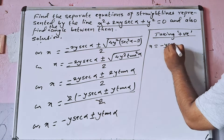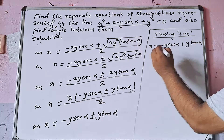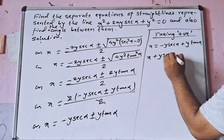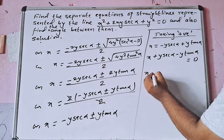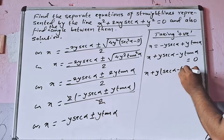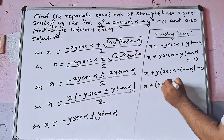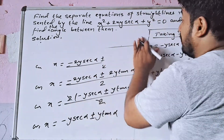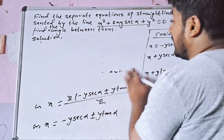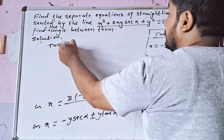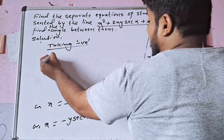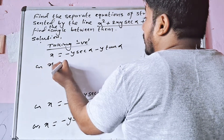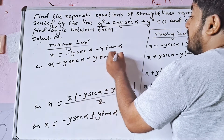Since sec²α minus 1 equals tan²α, we get root(sec²α minus 1) equals tanα. Taking the positive case: x equals minus y·secα plus y·tanα, which gives x plus y·secα minus y·tanα equals 0, or x plus y(secα minus tanα) equals 0. Taking the negative case: x equals minus y·secα minus y·tanα, giving x plus y·secα plus y·tanα equals 0.